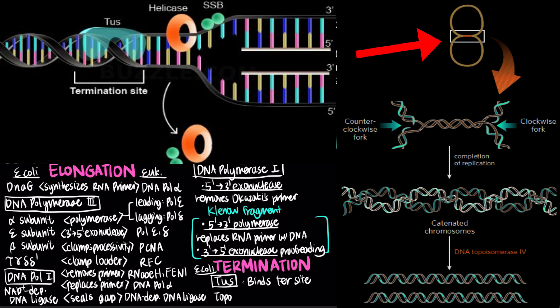Replication creates completed chromosome joined as interlinked circles, known as catenanes, which can only be resolved by topoisomerase 4, transiently breaking both DNA strands and creating two separated chromosomes.